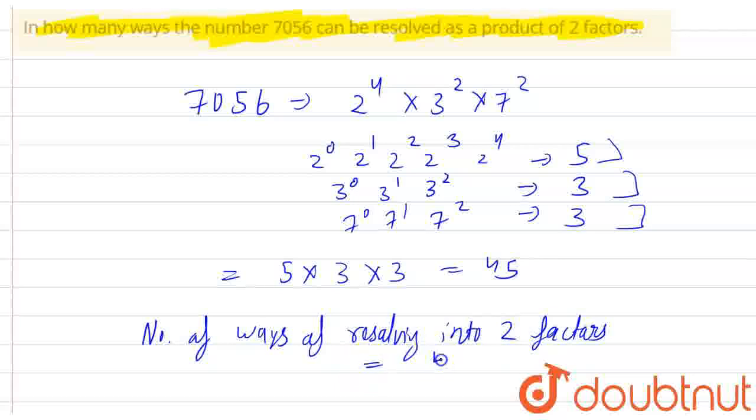That will be equal to 45 plus 1. We did plus 1 because this is an odd term. If it were an even term, then we would not do the plus 1. Divide by 2 because we want to divide it into 2 factors. Therefore, the answer for this question is 23.